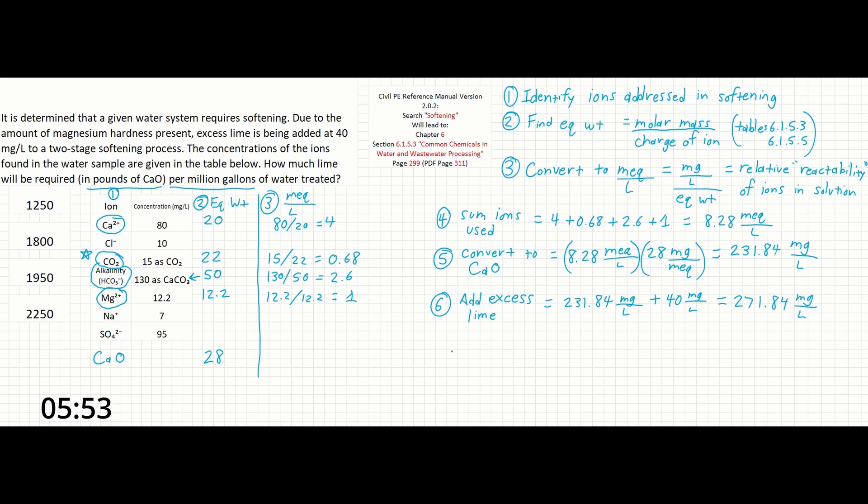For our final step, we need to do one final conversion. The problem asks for the answer in terms of pounds per million gallons. The reference manual has a conversion factor for this, and it is 8.34 pounds per million gallons over milligrams per liter. So multiplying this conversion factor times our 271.84 milligrams per liter will give us 2,267.15 pounds per million gallons.